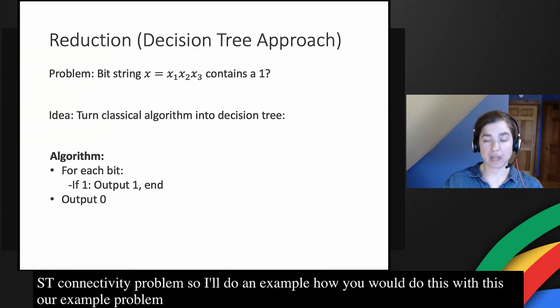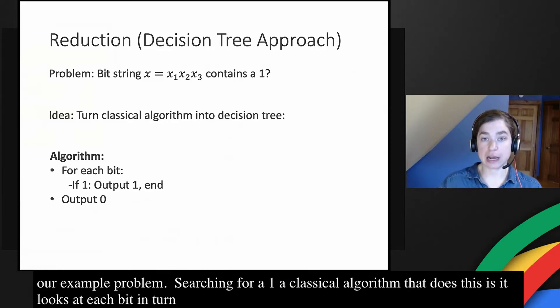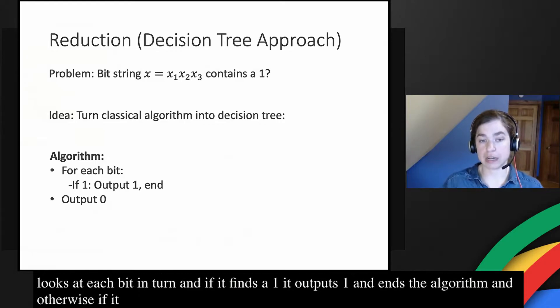I'll do an example of how you do this with our example problem. If we're just searching for a one, a classical algorithm that does this is it looks at each bit in turn, and if it ever finds a one, it outputs one and ends the algorithm. Otherwise, if it looks through all the bits and doesn't find a one, it outputs zero.